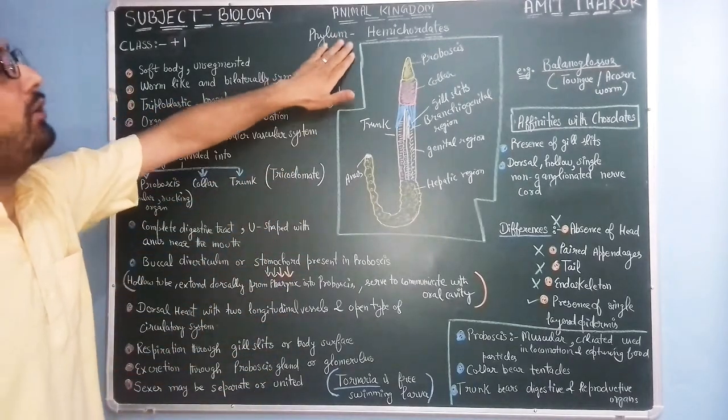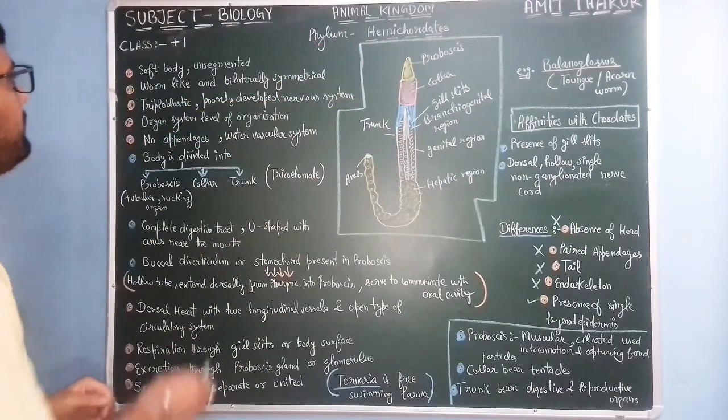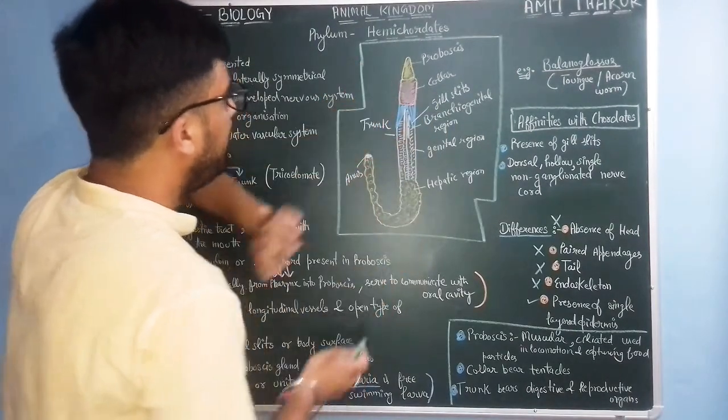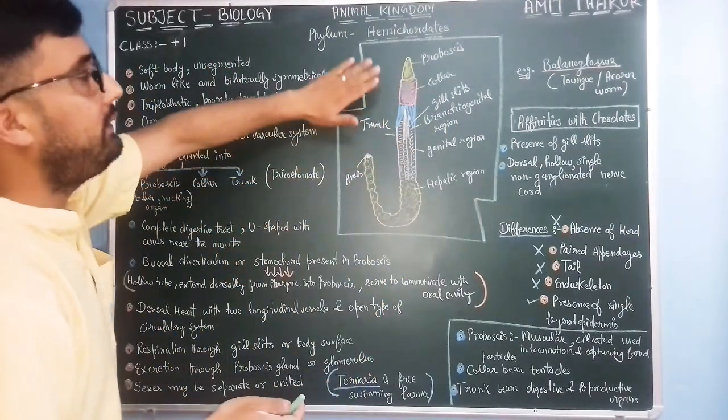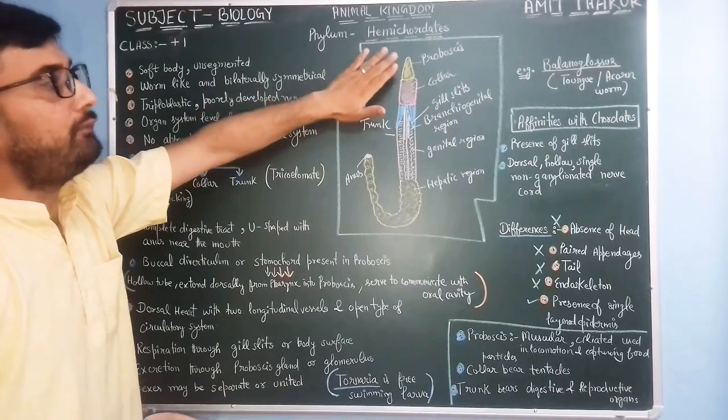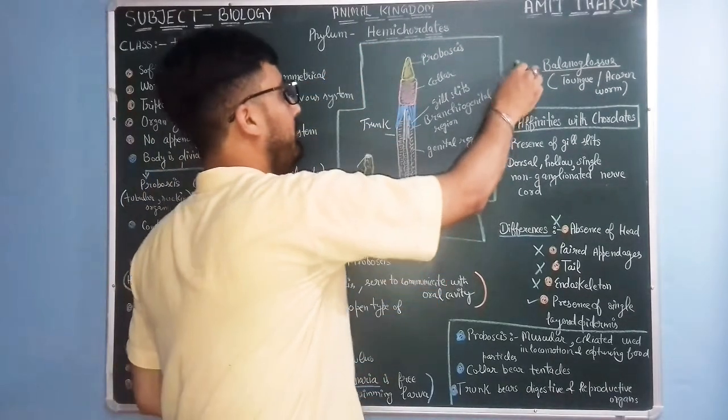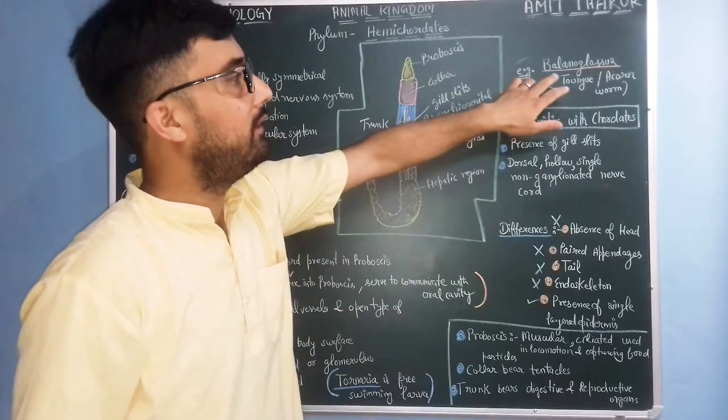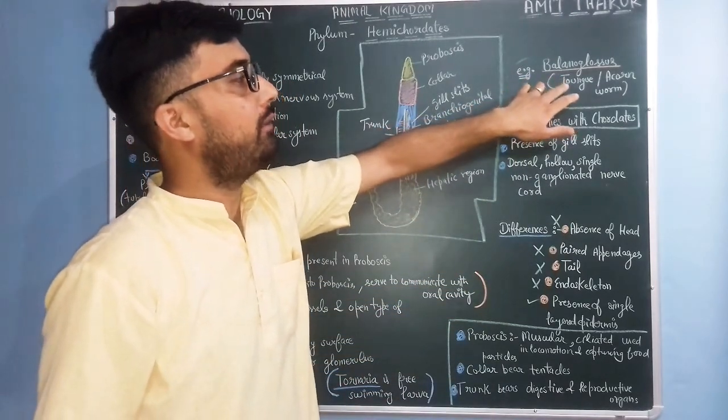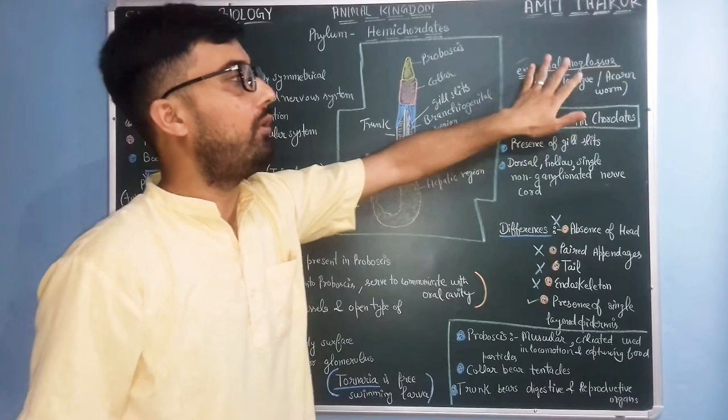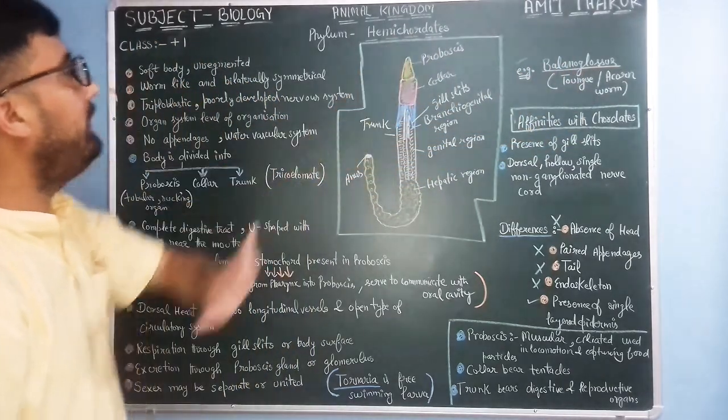Hemicordates, here is the structure of hemicordates. They are known as worm-like organisms. The best example is balanoglossus, also called tongue worm or acorn worm, the best example of hemicordates.